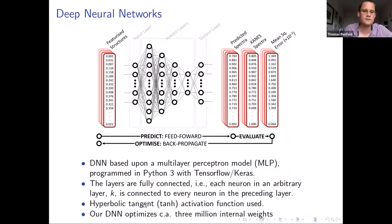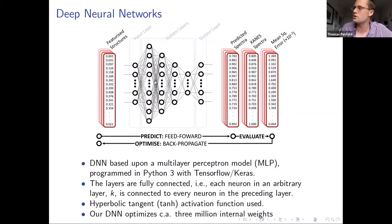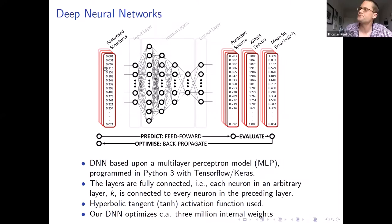Our deep neural network typically optimizes about three million weights. One concern is overfitting, especially if the training set of structures and spectra is not complete or insufficient — the network could optimize weights to find one particular route through the network rather than learning general features.